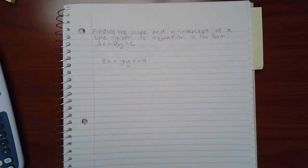This topic is finding the slope and y-intercept of a line given its equation in the form AX plus BY equals C.